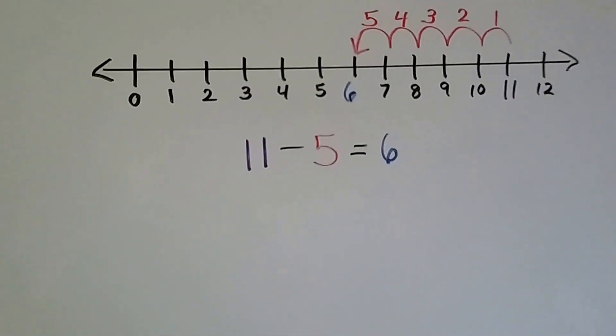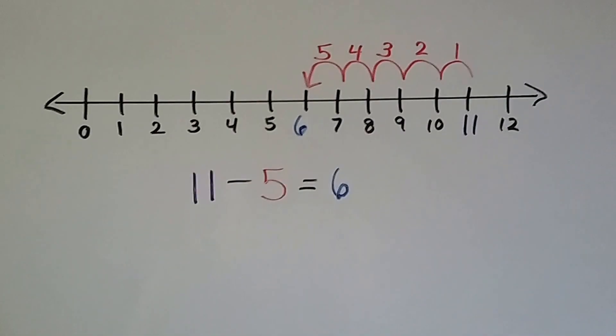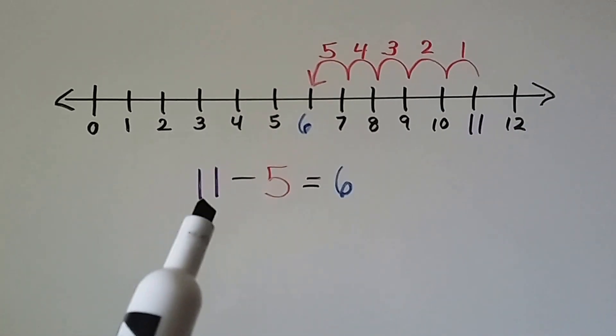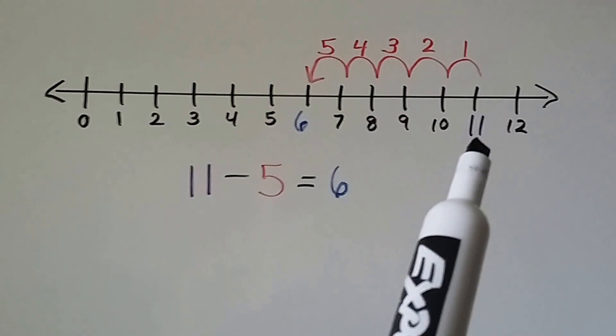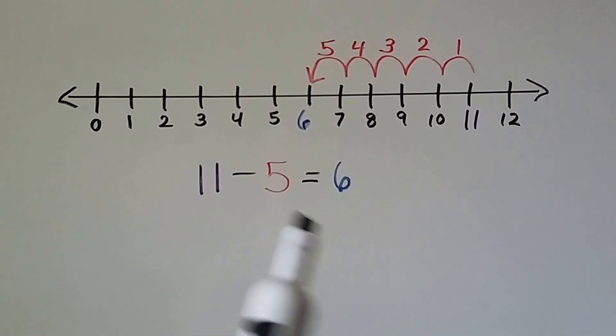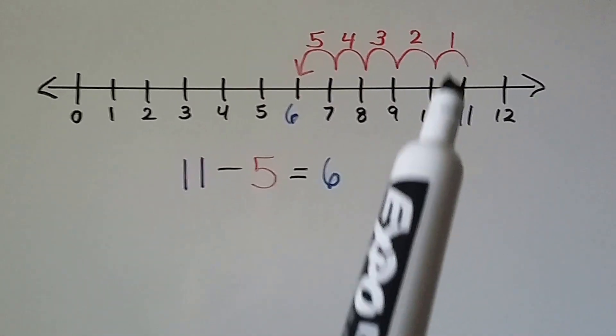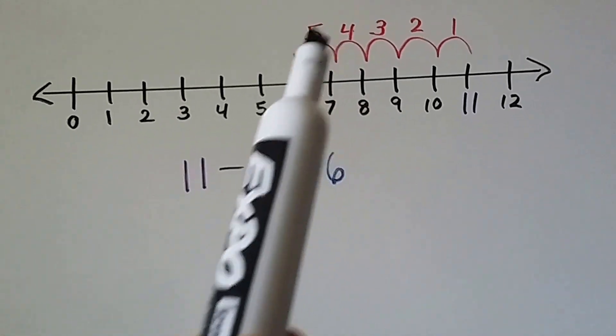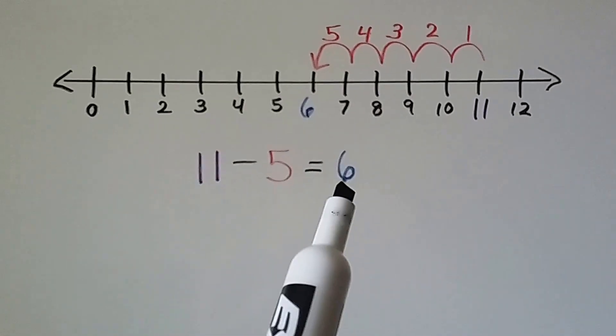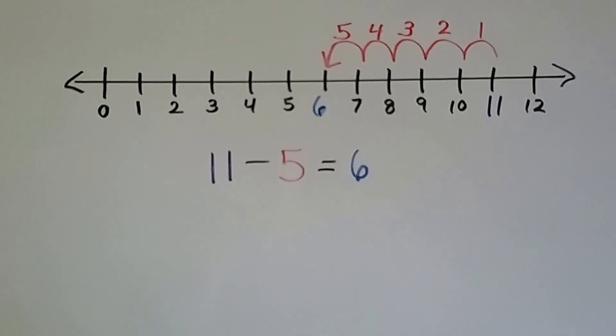We have another number line. We have 11 minus 5. We start with the minuend, the 11, and we hop back 5 times on the number line. 1, 2, 3, 4, 5 hops. That brings us to 6, so our difference is 6.